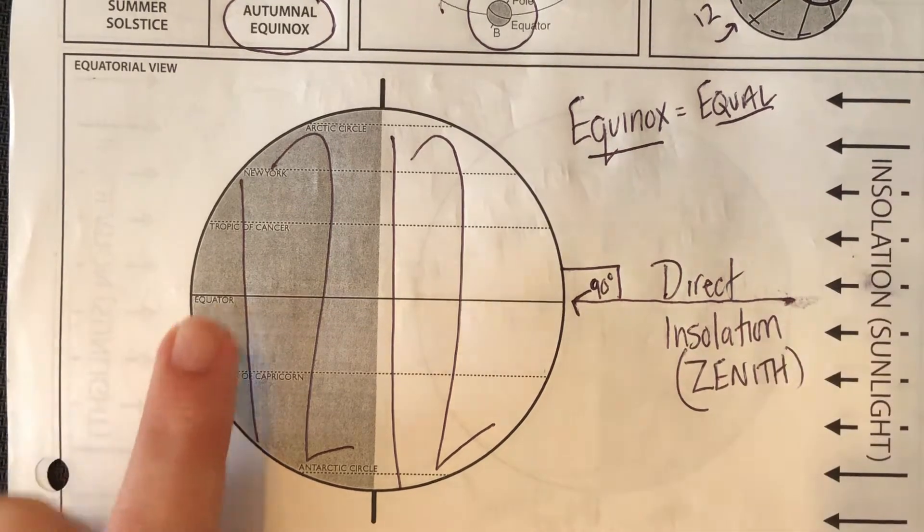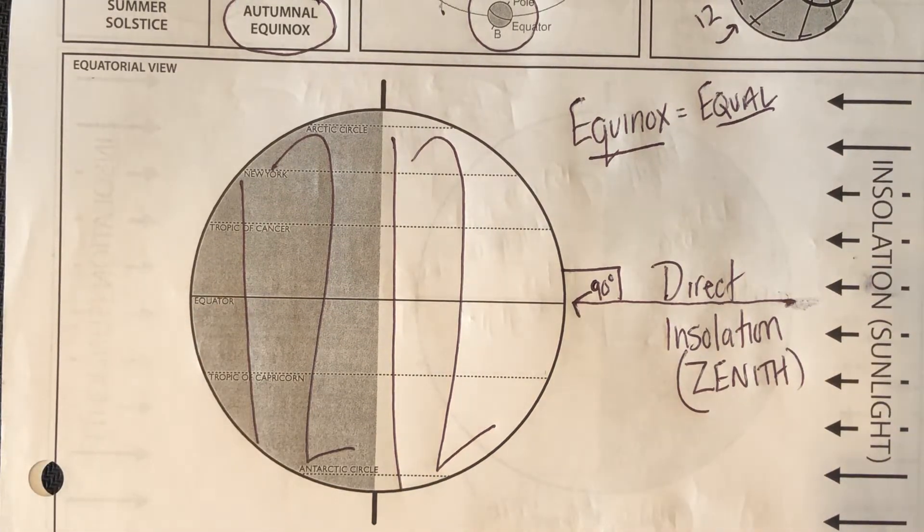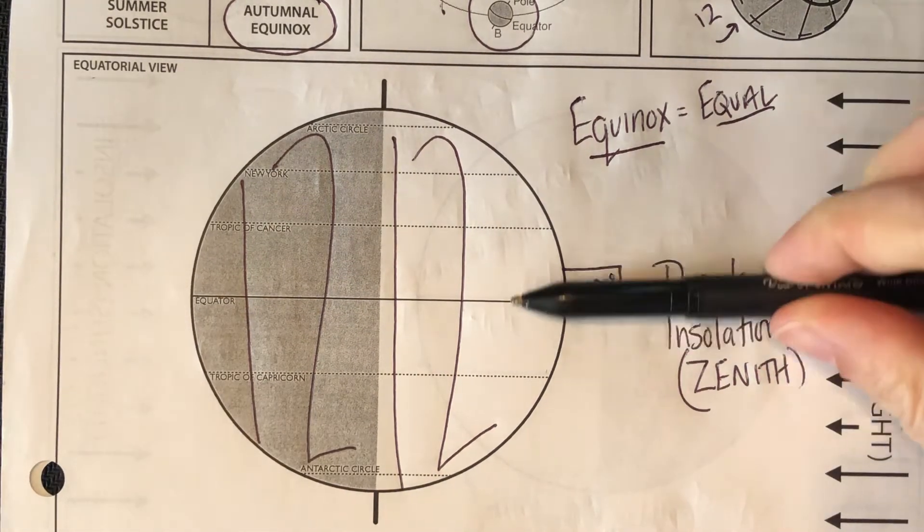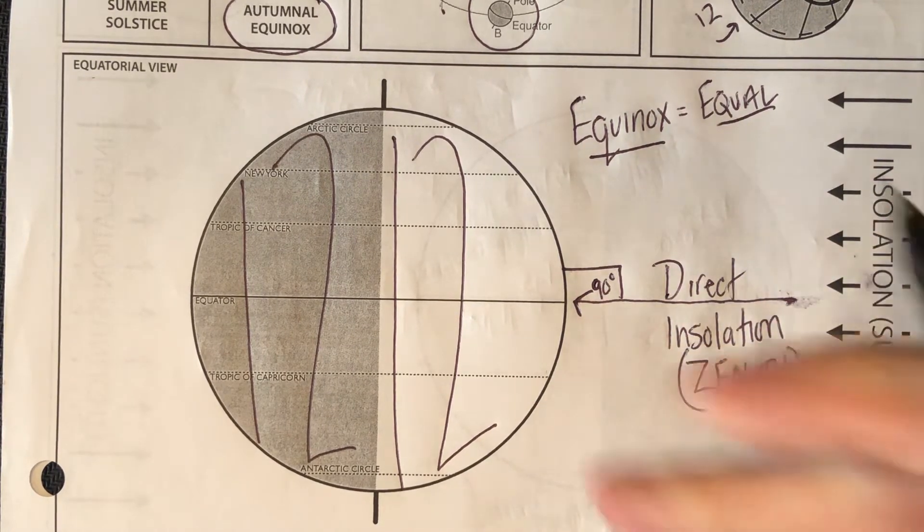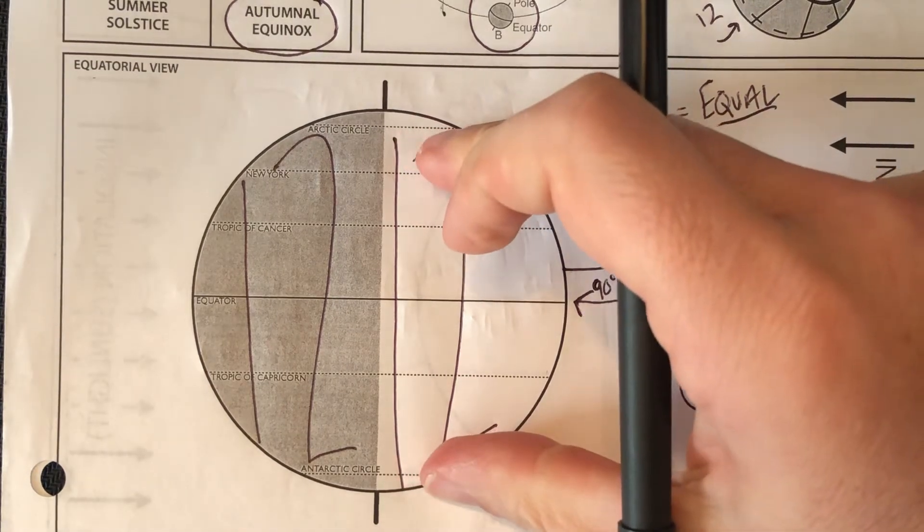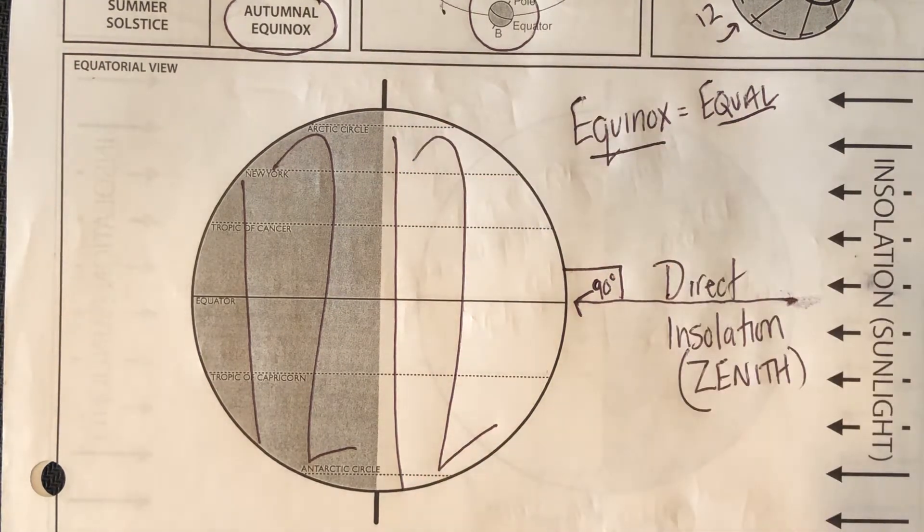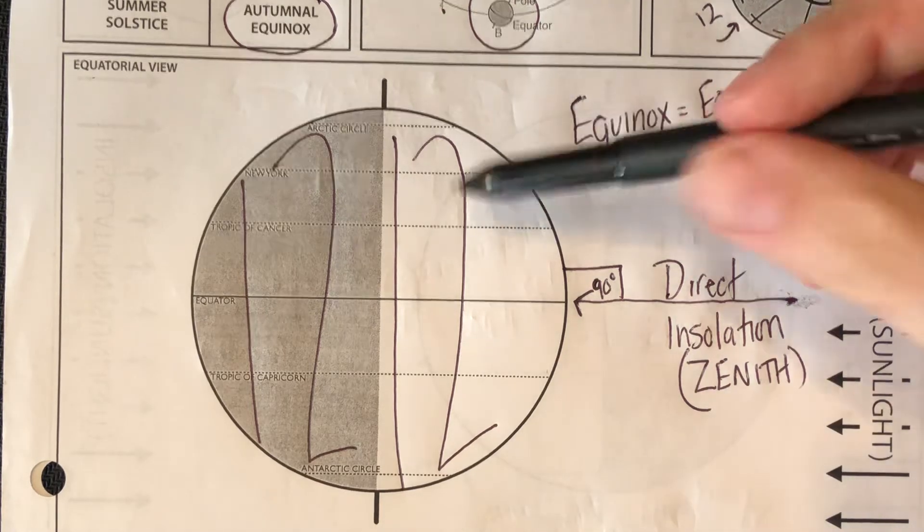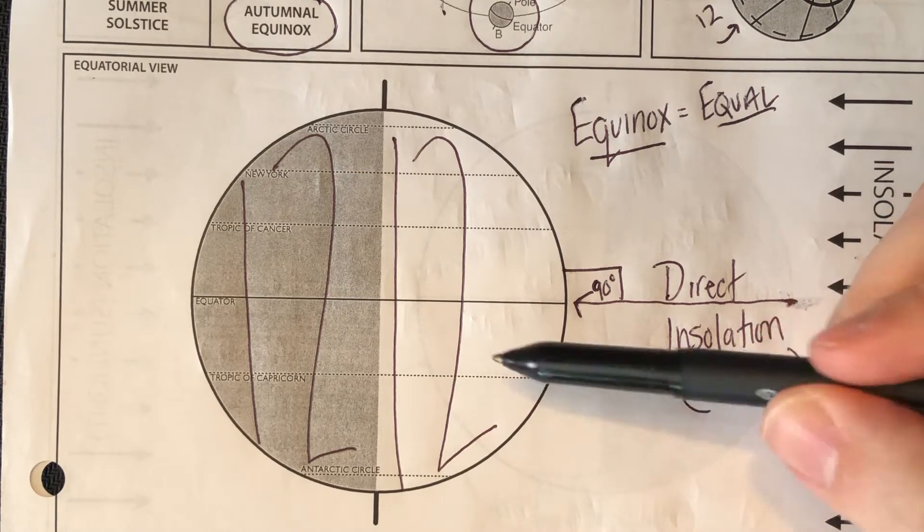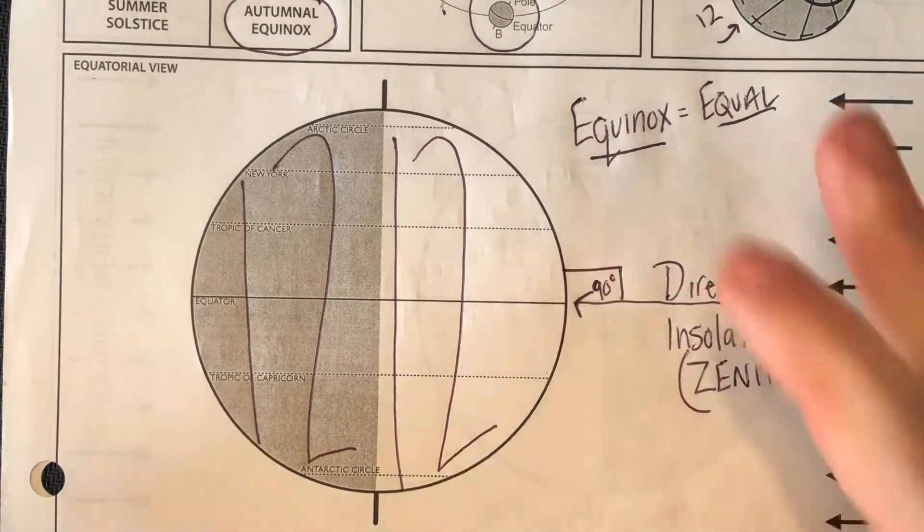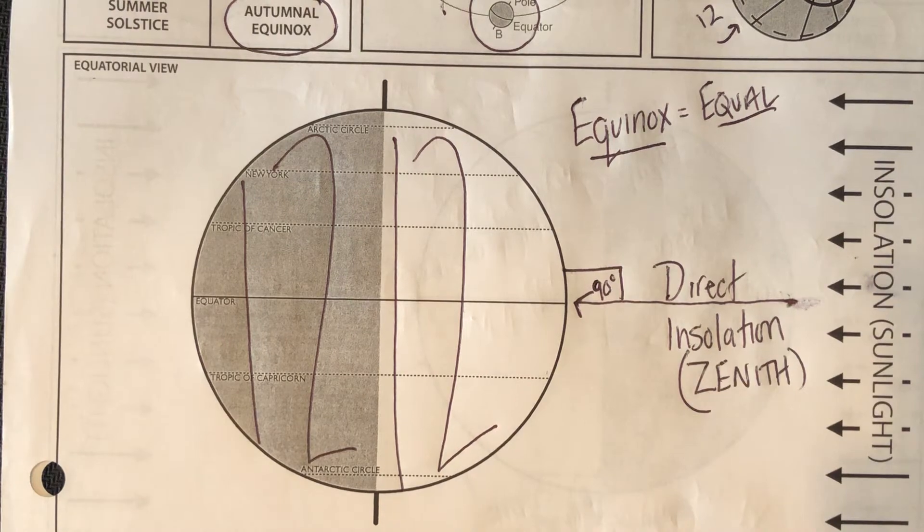So if you looked at my summer video and also my winter video, that zenith is going to fluctuate between the Tropic of Cancer and the Tropic of Capricorn. Now in those videos, the seasons are opposite. So when it's winter in the north, it's summer in the south. When it's summer in the north, it's winter in the south. When it's fall in the north, it's spring in the south. So everything's going to be opposite there. So again, 12 and 12 across the entire planet.